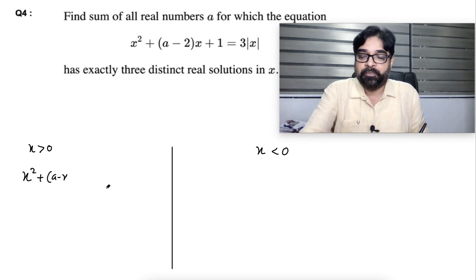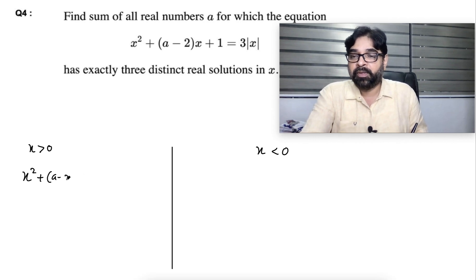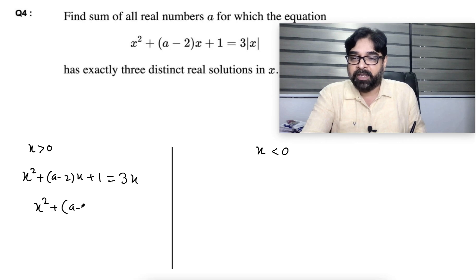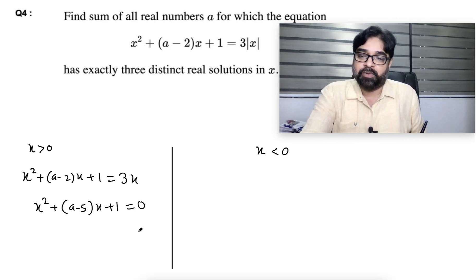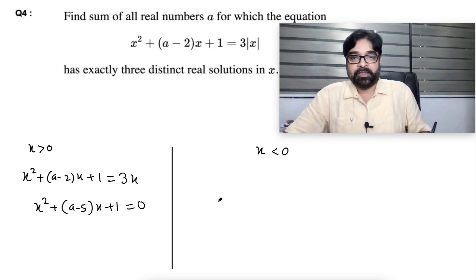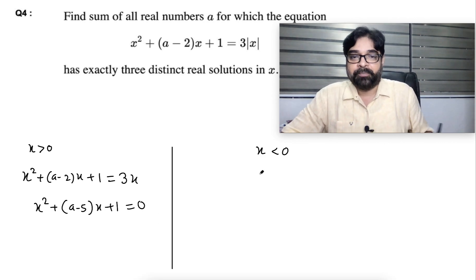...minus two, into x plus one equal to three x. Shifting to one side, this equation becomes x squared plus (a minus 5)x plus one equal to zero. This is the quadratic for case one (x > 0).